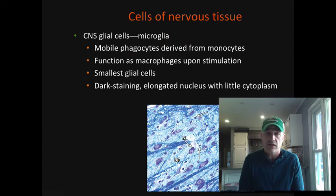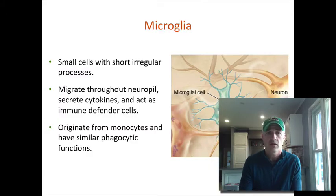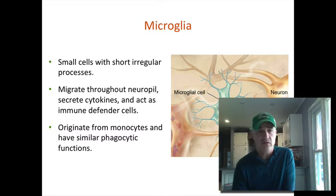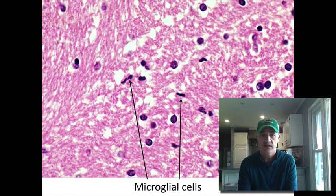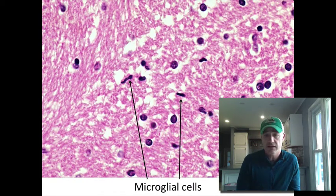Microglial cells have an elongated nucleus that stains dark — not something I'd probably make you identify. The only one I'd have you look at and know would be the astrocyte. You can see small cells with some branches going out from them; they can be involved in triggering some inflammation. Again, just these elongated nuclei that the arrows are pointing at — not something I'm going to try to make you differentiate from the other nuclei in this neuropil.